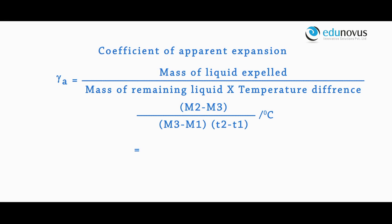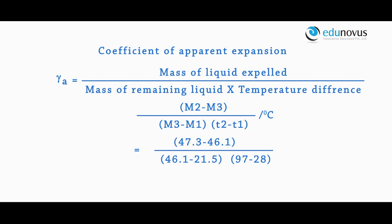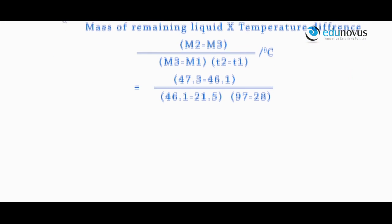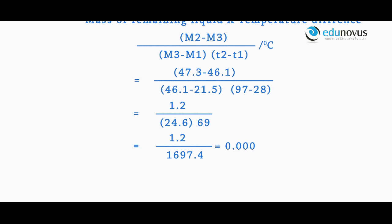The calculation is: (47.3 − 46.1) / ((46.1 − 21.5) × (97 − 28)), that is 1.2 divided by 1697.4, which equals 0.000706. Therefore, the coefficient of apparent expansion of coconut oil is 7.06 × 10⁻⁴ per degree centigrade.